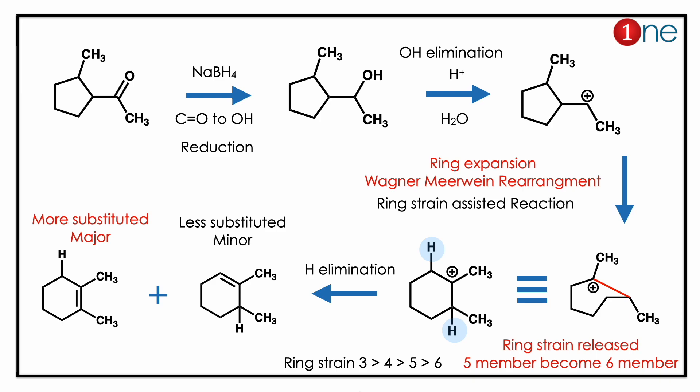You have a strained ring in the system, which can assist the reaction, so ring expansion happens — the five-membered ring becomes a six-membered ring. So you have a six-membered ring with a carbocation that has to be quenched.